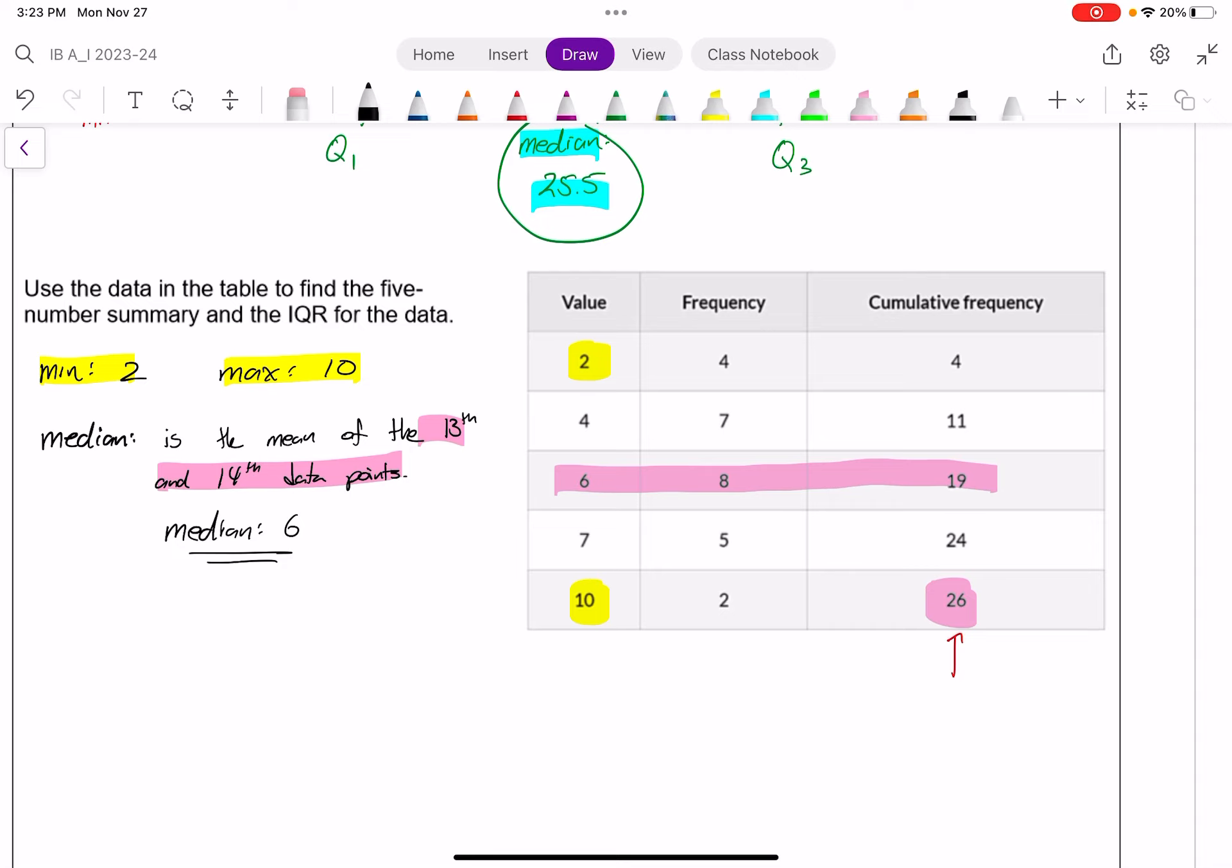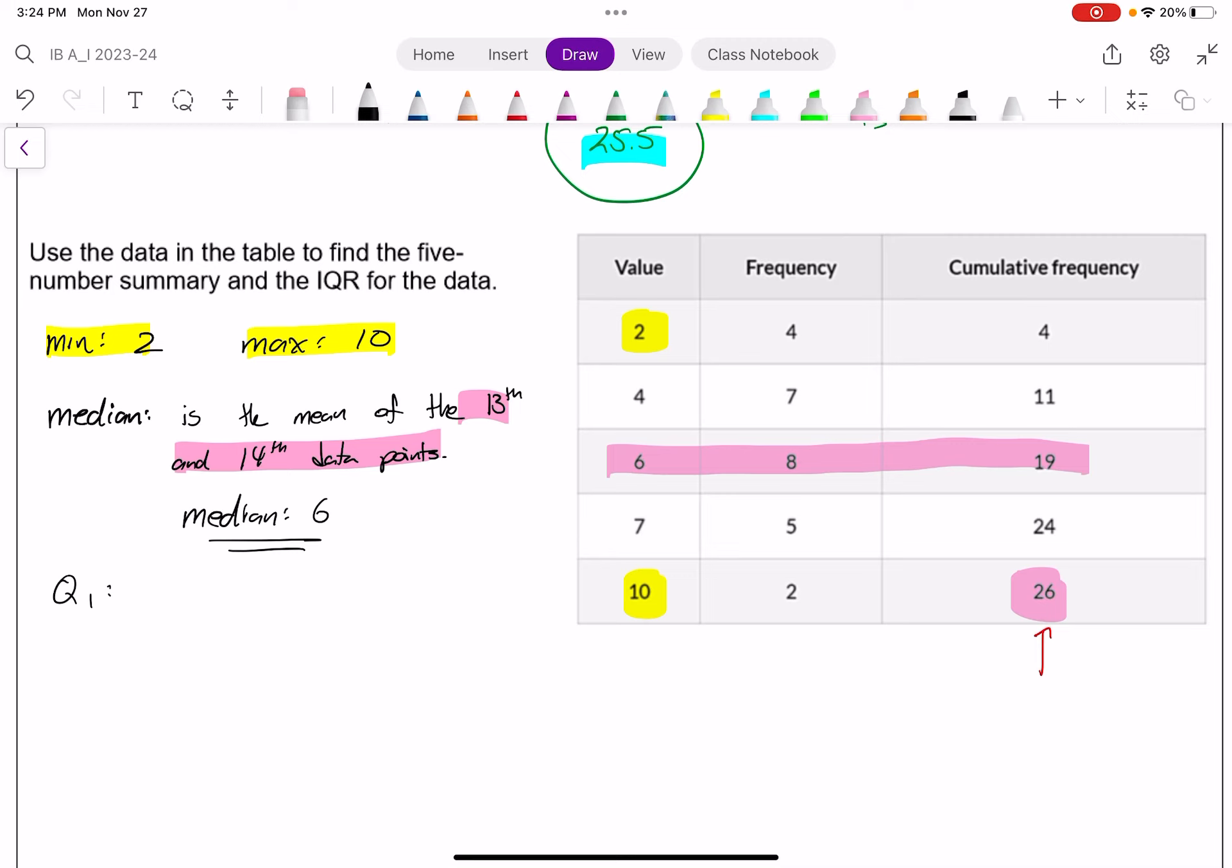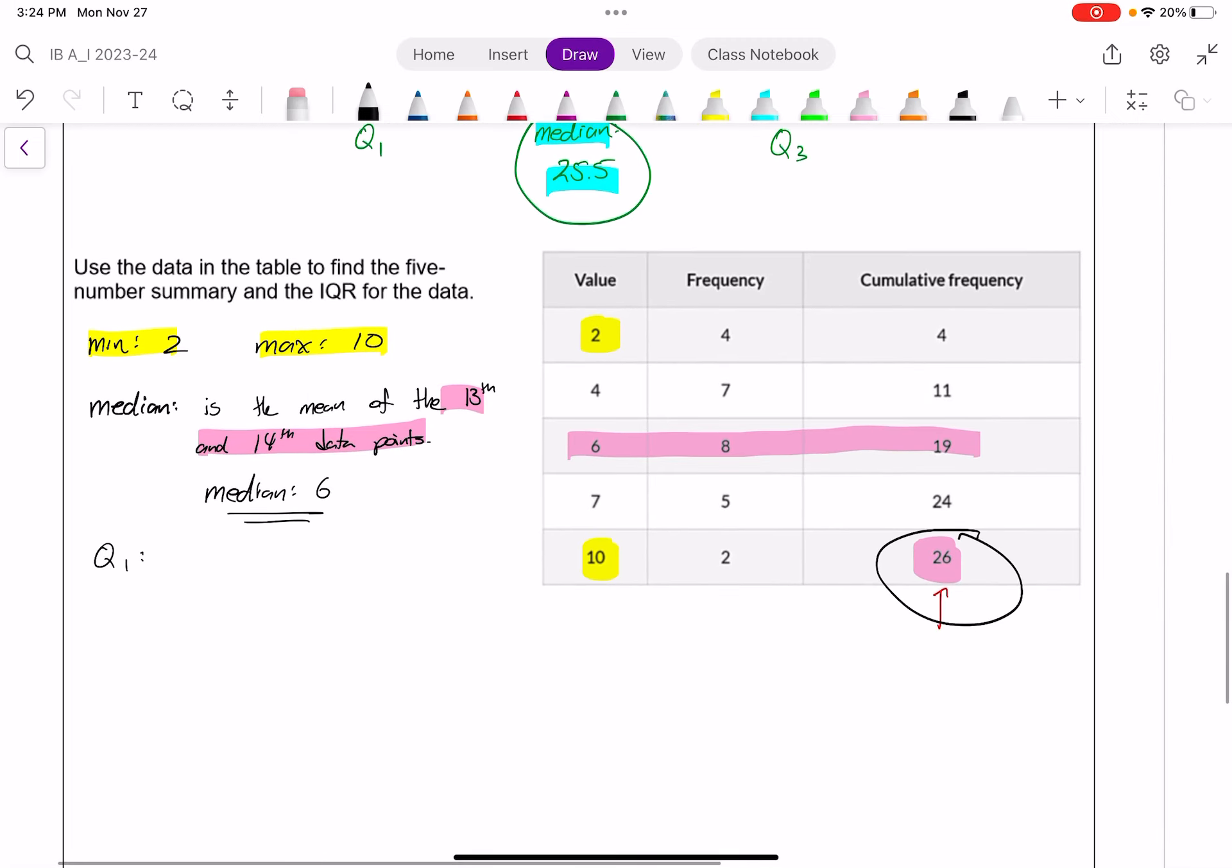Because remember this means we have four twos, seven fours, eight sixes, and so on. That's what this is showing us, and I'm far too lazy to keep writing that out. All right, so now we have our first quartile, our Q1, which is the median of the first half of our data. Remember, there's 26 points of data, so it's the median of the first 13 points. And so this is the median or the middle of the first 13 values.